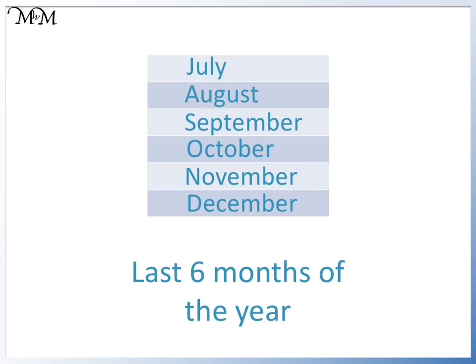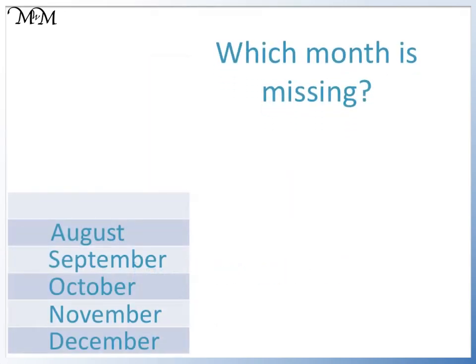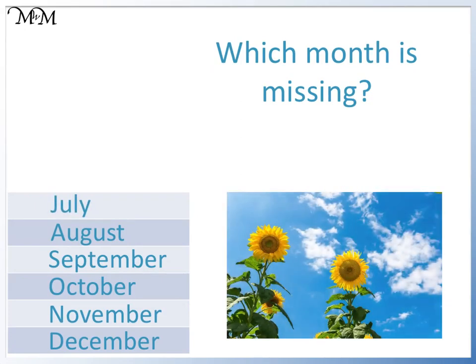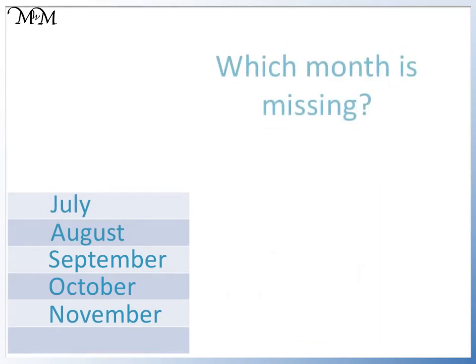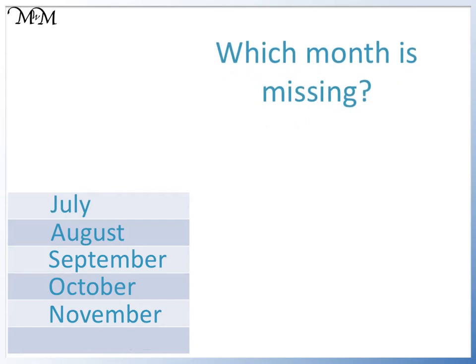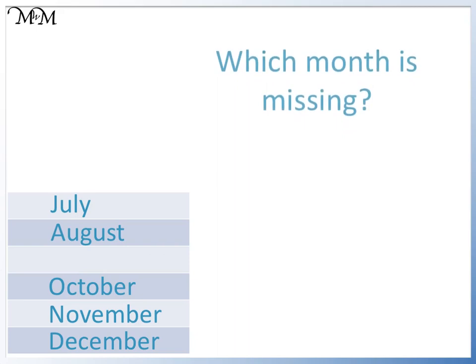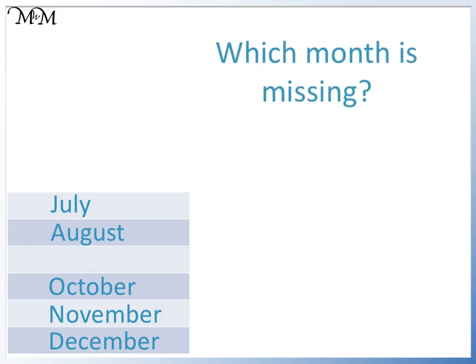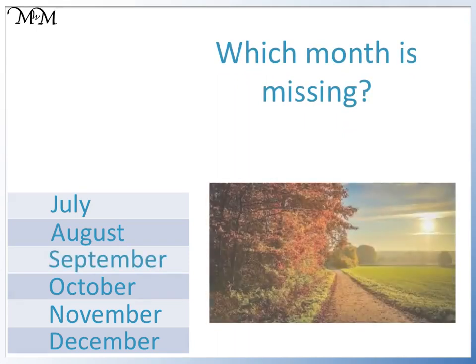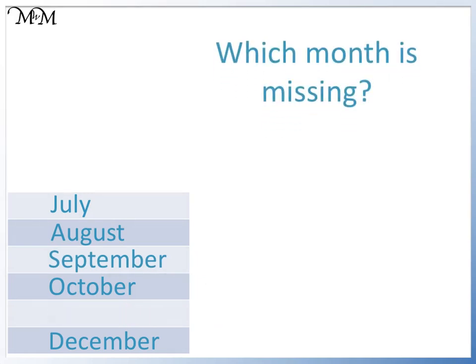Pause the video and see if you can remember the order of the final six months. Which month is missing? It's July. Which is the last month that is missing? It's December, the last month of the year. Which month is missing between August and October? It's September. Which is the second to last month that is missing? It's November.